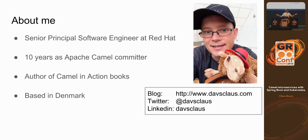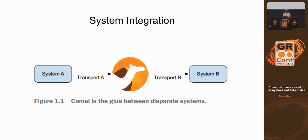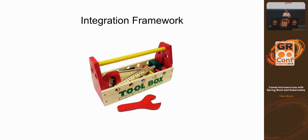So what is Camel and what do you use it for? Camel is used for system integration — it's that piece of software that sits between systems and integrates them. From a developer point of view, we categorize Camel as an integration framework or integration toolbox.